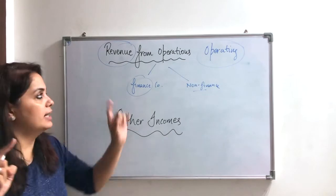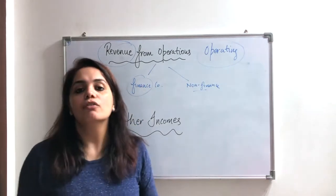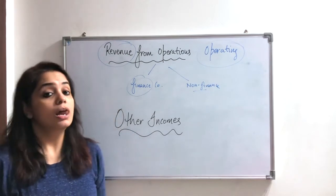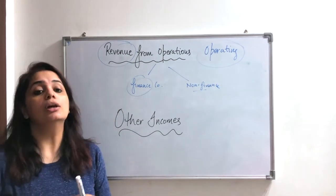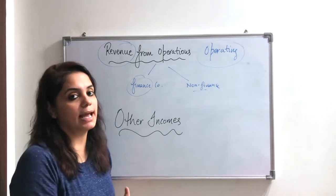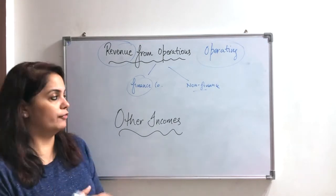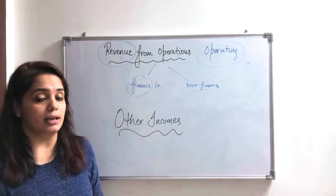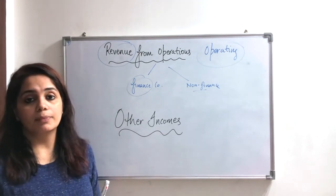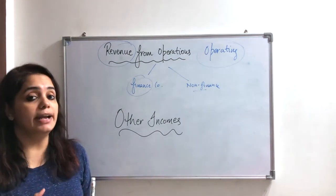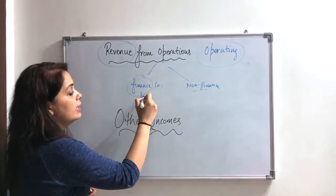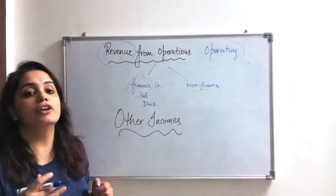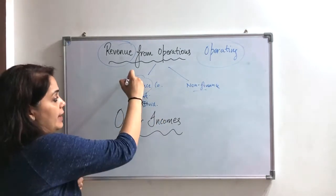Revenue from operations means the income or revenue that the company gets through its operating activities. And what are the operating activities? The activities that companies carry out just to earn profit. Now for a finance company — what kind of income will it earn? When it receives interest or dividend, those are its operating earnings. So interest, dividend — all these things are revenue from operations for the finance company.